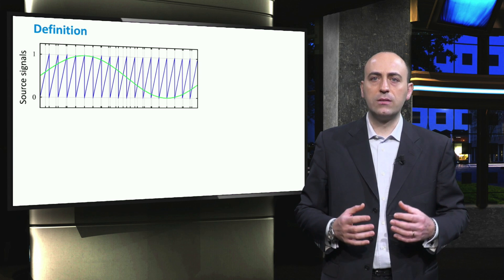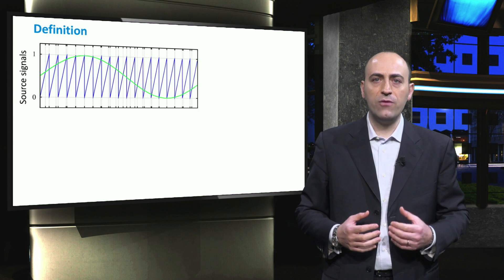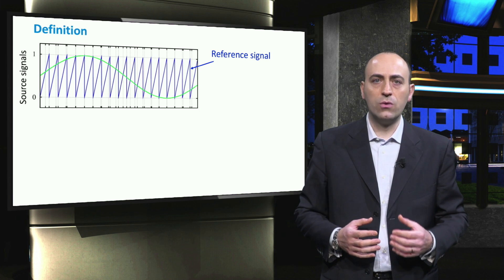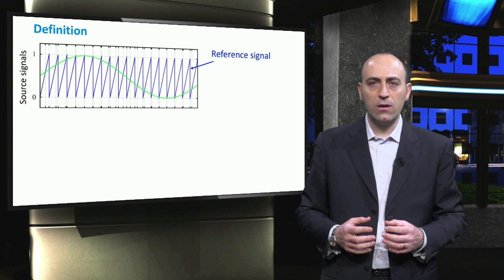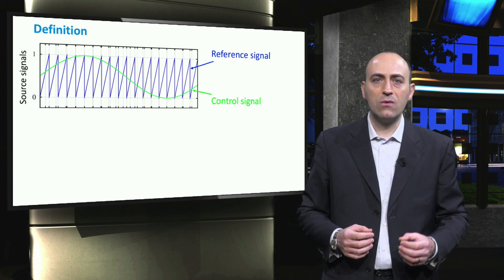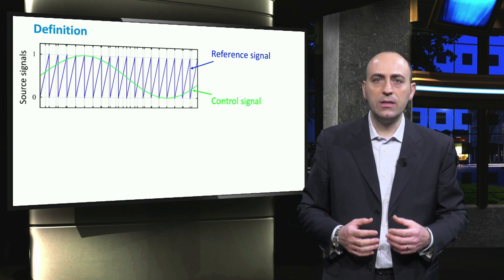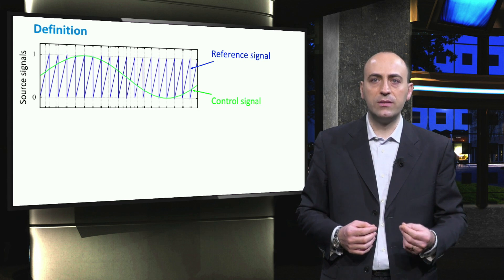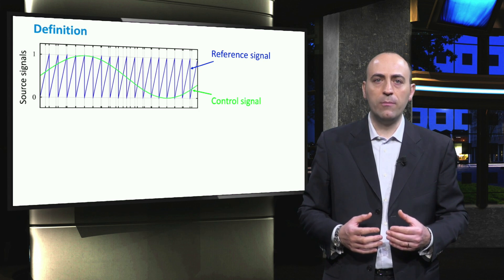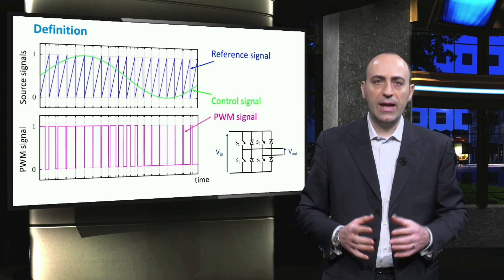The PWM method is obtained by comparing two signals. The first signal, called the reference signal, is a high frequency periodic signal. This signal is either a triangular or a sawtooth signal. The second signal is called the control signal, and it is a pure sinusoidal wave that allows to control the frequency and amplitude of the H-bridge output. Usually this sinusoid is directly retrieved from the main grid signal. These two signals are compared in a time frame to obtain a PWM signal that is used to control the switches.